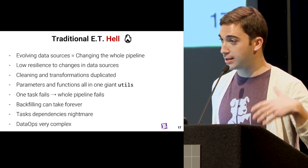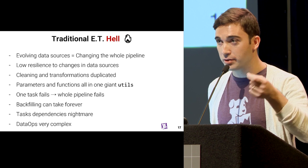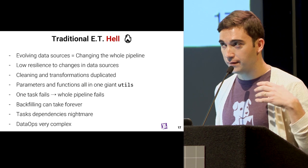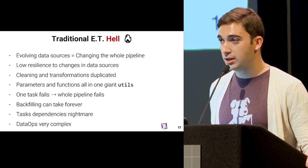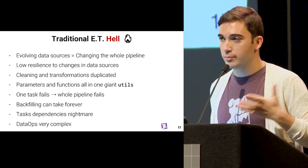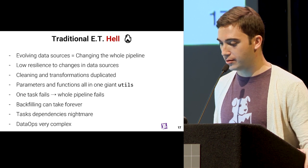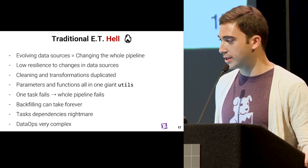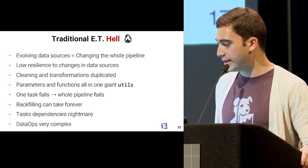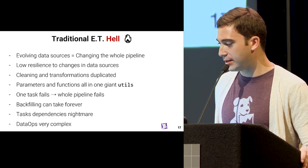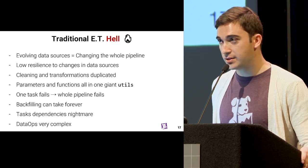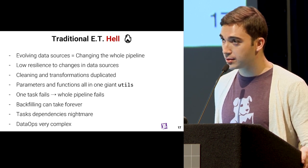Facing these challenges with a traditional ETL approach can become a nightmare. Data sources that are always evolving means every time you need to change and tweak the whole pipeline — lower resilience to changes in the data source. If your system doesn't have versioning and the data is always evolving, you can't go back in time. Cleaning and transformation can be duplicated, helper functions live in a giant utils file, one test fails and the whole pipeline fails, backfilling can take forever, and managing dependencies between tasks can be very complex.